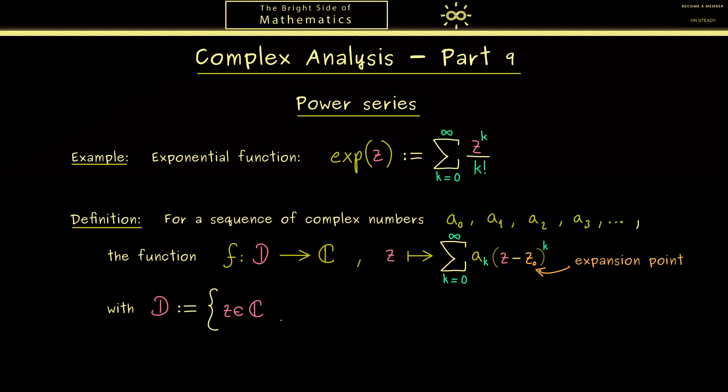Hence this restriction is now what we have to put into the definition of D. So we can say we have all the complex numbers z where this limit exists. Or in other words we simply say the series is convergent. Okay then you see we have a well-defined function. Maybe the domain is very small but still we always call this function a power series.